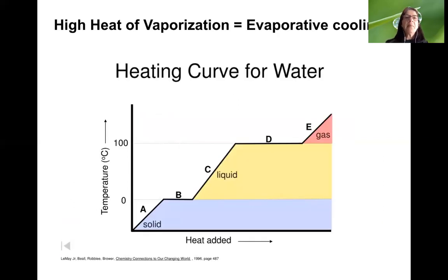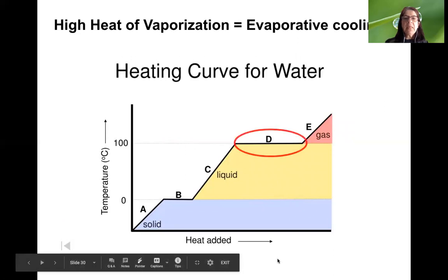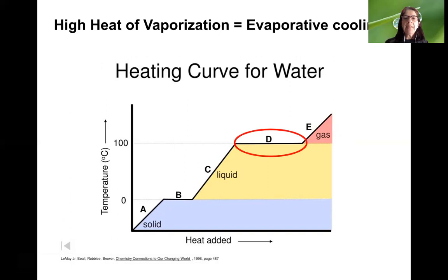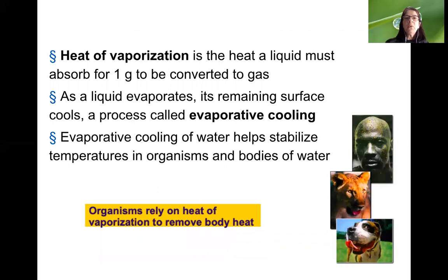Another important feature is the high heat of vaporization, which is used in evaporative cooling. Looking at the heating curve graph, the line stays flat at 100°C for a long time — you keep adding heat, yet the water remains liquid at 100°C before eventually evaporating. It takes a lot of energy for water to turn from liquid to gas. This feature is used in evaporative cooling: when mammals sweat, water absorbs a large amount of heat before evaporating, leaving the underlying surface cooler, which helps maintain homeostasis and a relatively constant body temperature.